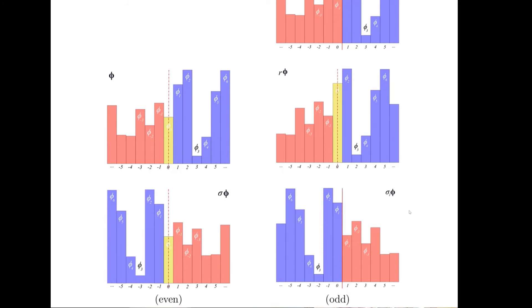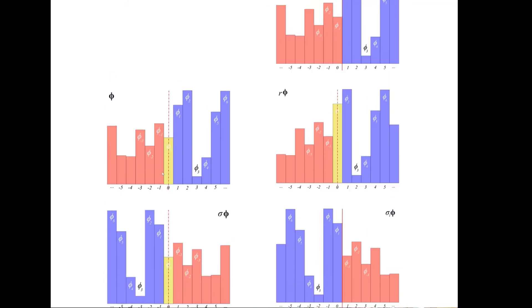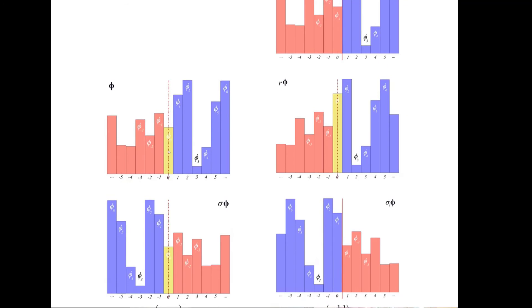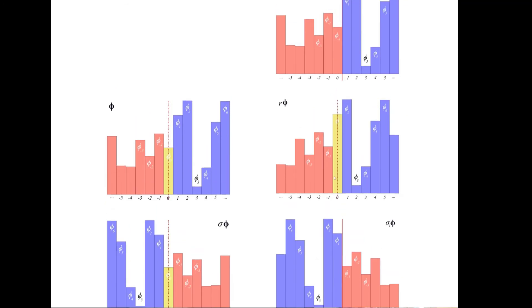which we call odd reflection, no point remains unchanged. In this reflection, nothing was the fixed point. But here the reflection actually happened across the mid-interval between those two points.